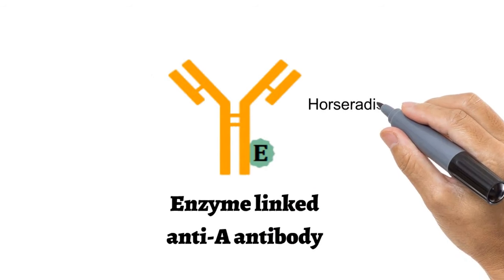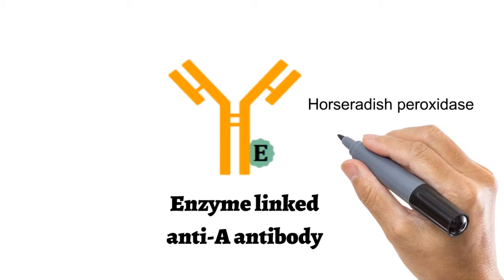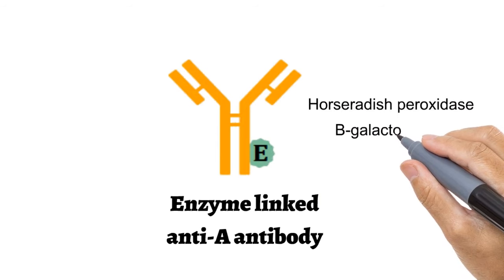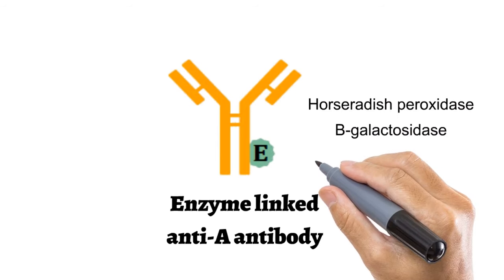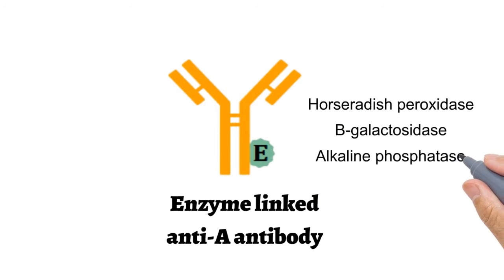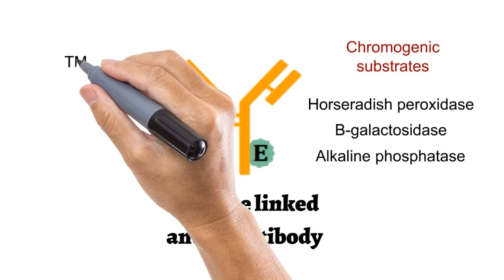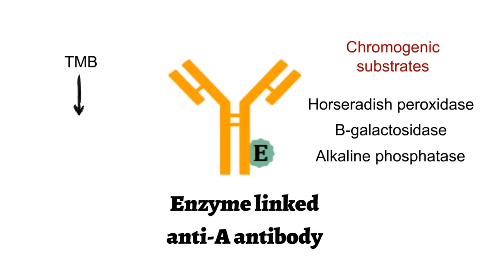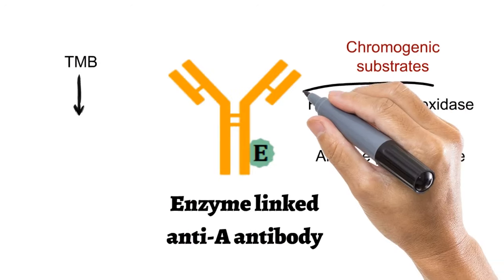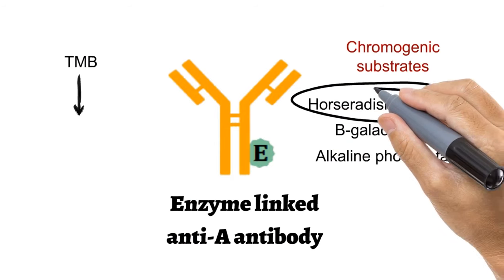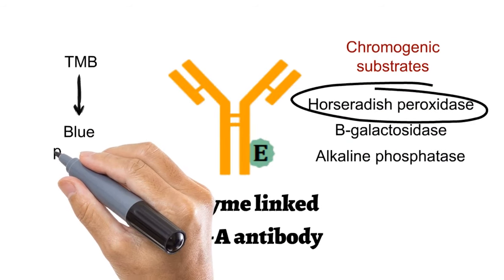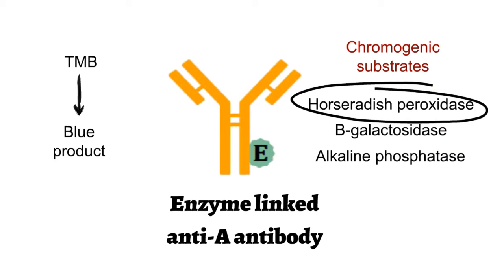The enzyme can be horseradish peroxidase, beta-galactosidase, or alkaline phosphatase. All these enzymes have chromogenic substrates. For example, TMB, that is tetramethylbenzidine, which is the substrate of enzyme horseradish peroxidase, gives blue color when converted into the product, and its intensity can be determined by spectrophotometric method.